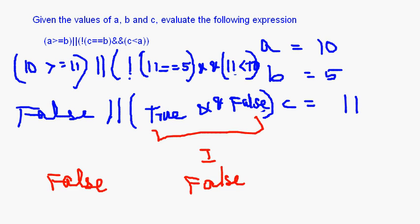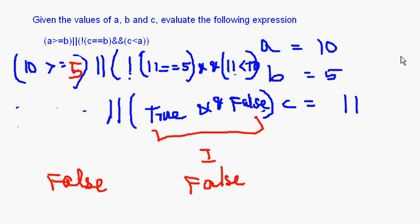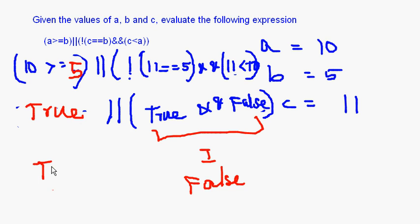Let me correct: a greater than or equal to b should be 10 >= 5, not 10 >= 11. So 10 >= 5 is true. NOT (11 == 5) is NOT false, which is true. And 11 less than 10 is false. So: true AND false is false. Then true OR false — the final answer is true.